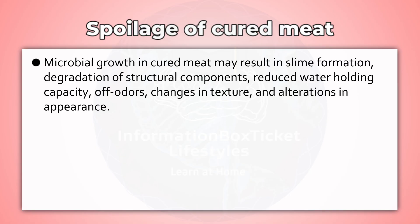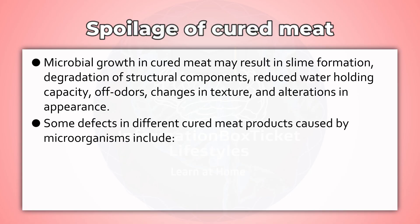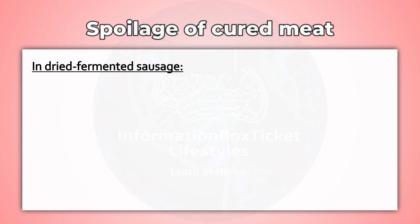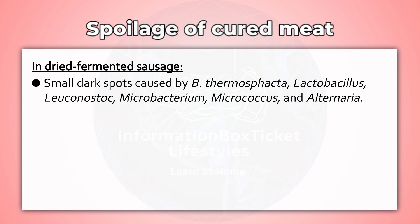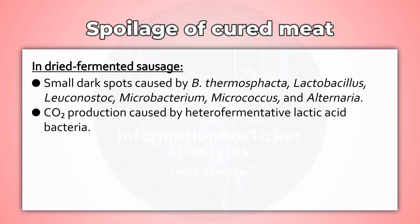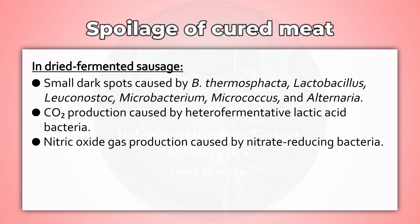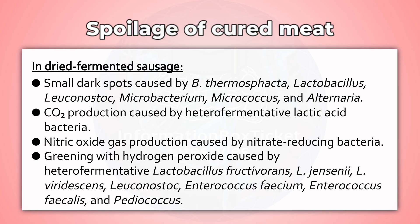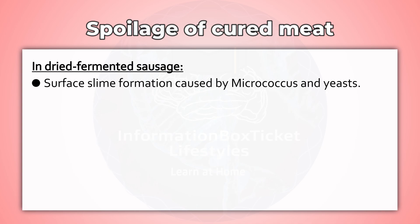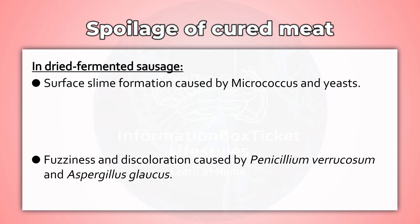Some defects in dried fermented sausage caused by microorganisms include: small dark spots caused by B. thermosphacta, Lactobacillus, Leuconostoc, Microbacterium, Micrococcus, and Alternaria; CO2 production caused by heterofermentative lactic acid bacteria; nitric oxide gas production caused by nitrate-reducing bacteria; greening with hydrogen peroxide caused by heterofermentative Lactobacillus fructivorans, L. jensenii, L. viridescens, Leuconostoc, Enterococcus faecium, Enterococcus faecalis, and Pediococcus; surface slime formation caused by Micrococcus and yeasts; and fuzziness and discoloration caused by Penicillium verrucosum and Aspergillus glaucus.